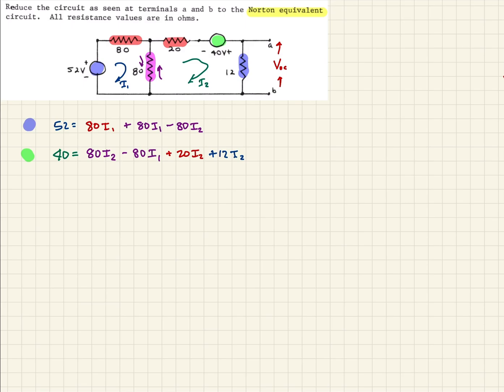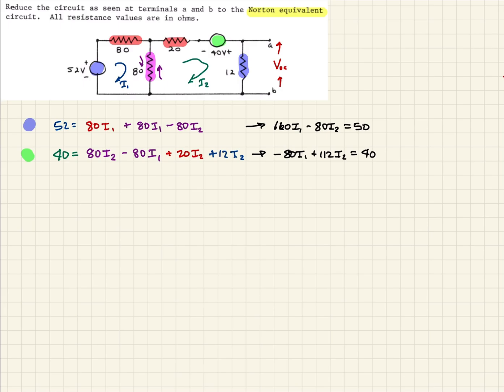Now we can clean these up and rewrite them. Gathering like terms, the first equation becomes 160·I1 minus 80·I2 equals 52. The bottom equation becomes minus 80·I1 plus 112·I2 equals 40 volts. We have two equations and two unknowns, solvable by term elimination or linear algebra with matrices — I'll trust you can already solve these simultaneous equations.